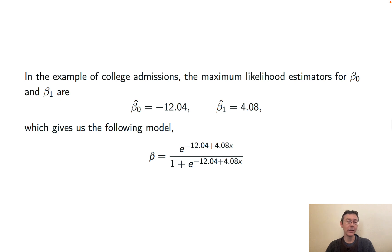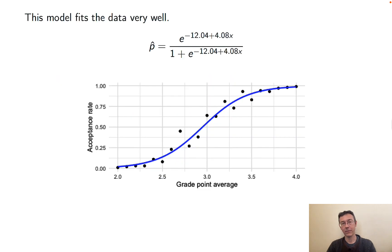Plugging those in, we get this model. You give me the GPA of a student, I'll give you the probability of them getting accepted into this college. If we plot this curve, we get a pretty good fit to our data. Here, I've shown the fit with the points representing those proportions of observed successes.